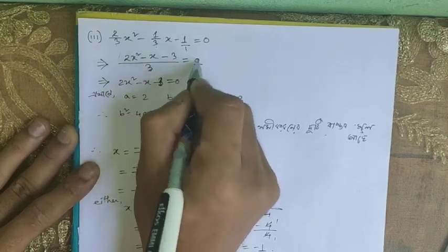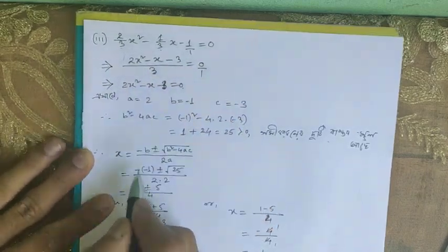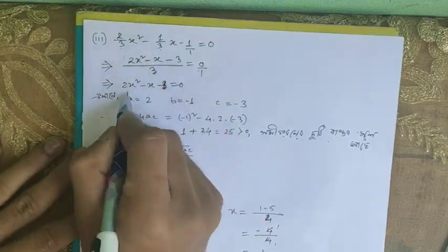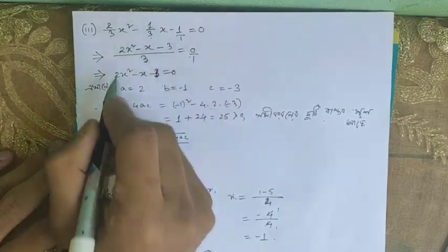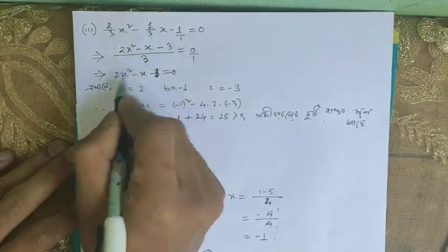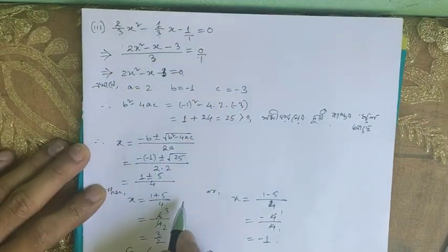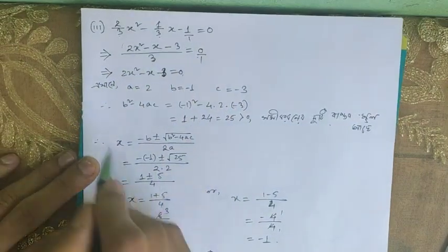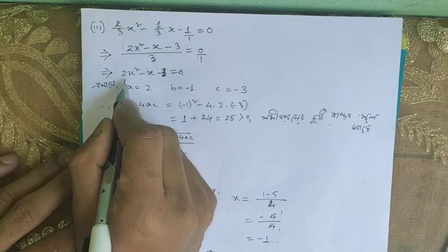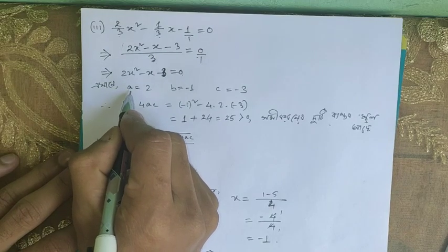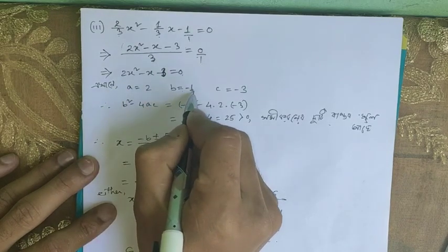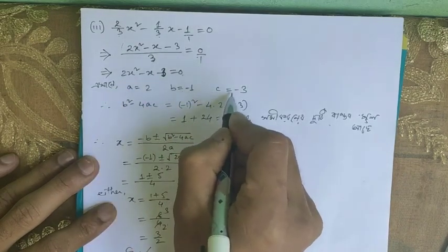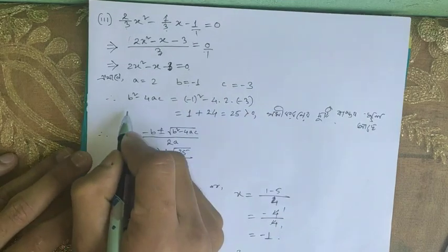So zero. We will substitute this value: 3 into 0 and 0, which will be equal to zero. We will check the value. As we know, we will write x: for a equals 2, b provides minus 1 and minus 3.